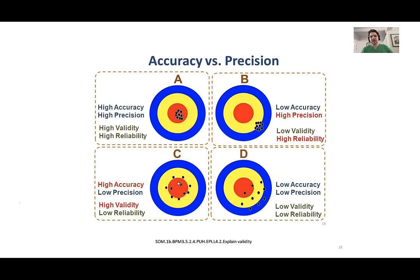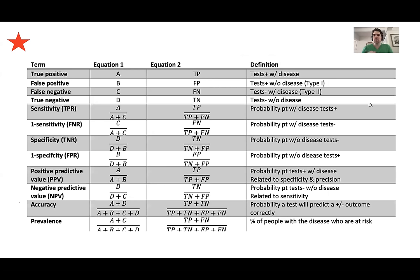Precision is a clustering pattern, whereas accuracy is around the bullseye. We want accurate around the bullseye plus precise — this clustering pattern. That's ideally what we want: accurate toward the bullseye and clustered for increased precision.